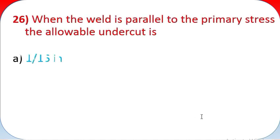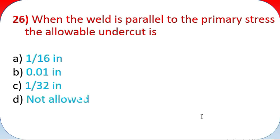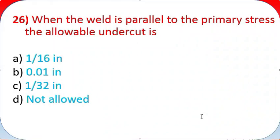Question 26: When the weld is parallel to the primary stress, the allowable undercut is: A - 1/16 inch, B - 0.01 inch, C - 1/32 inch, D - not allowed.